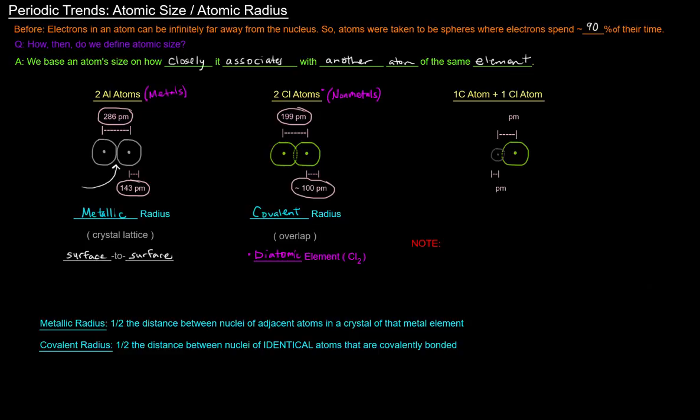So over here to the right, I've got one carbon atom bound to one chlorine atom. So here, this little gray guy right here is carbon, a carbon atom. And the green, of course, is the chlorine, the chlorine atom.